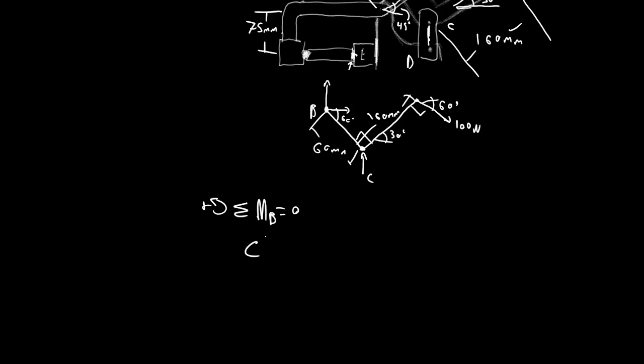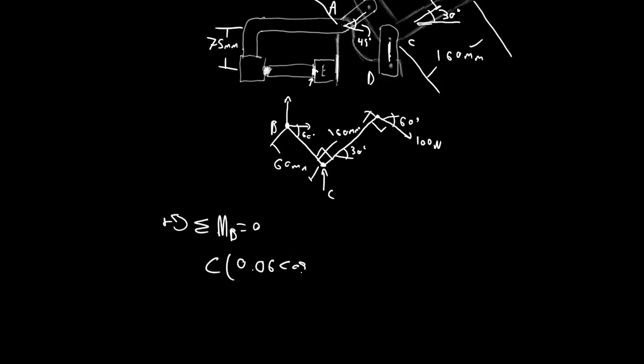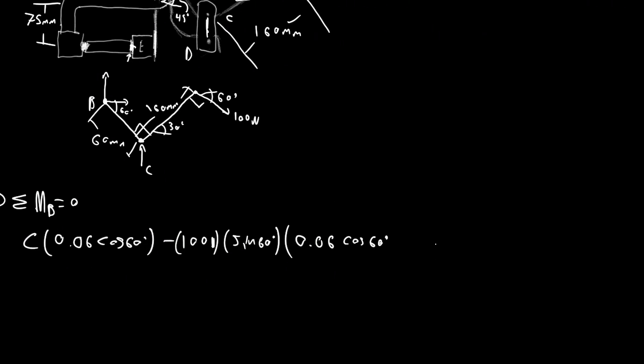I'll just call it C, acting at 60 millimeters, 0.06 meters. It has to be perpendicular distance, so C times 0.06 cos 60 degrees. Then we'll have the vertical component of this one going down, which will create a clockwise moment, so negative. This is counterclockwise, so it's positive. So minus 100 newtons sine 60 degrees times perpendicular distance 0.06 cos 60 plus 0.16 meters times cos 30.